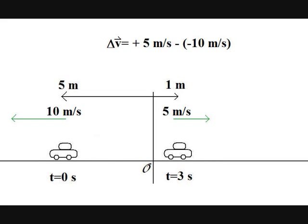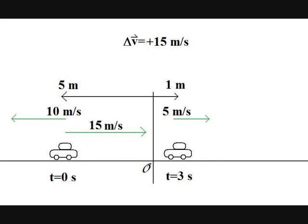Final minus initial gives positive five meters minus negative 10 meters per second equal to positive 15 meters per second. So the velocity changed by 15 meters per second over these three seconds.